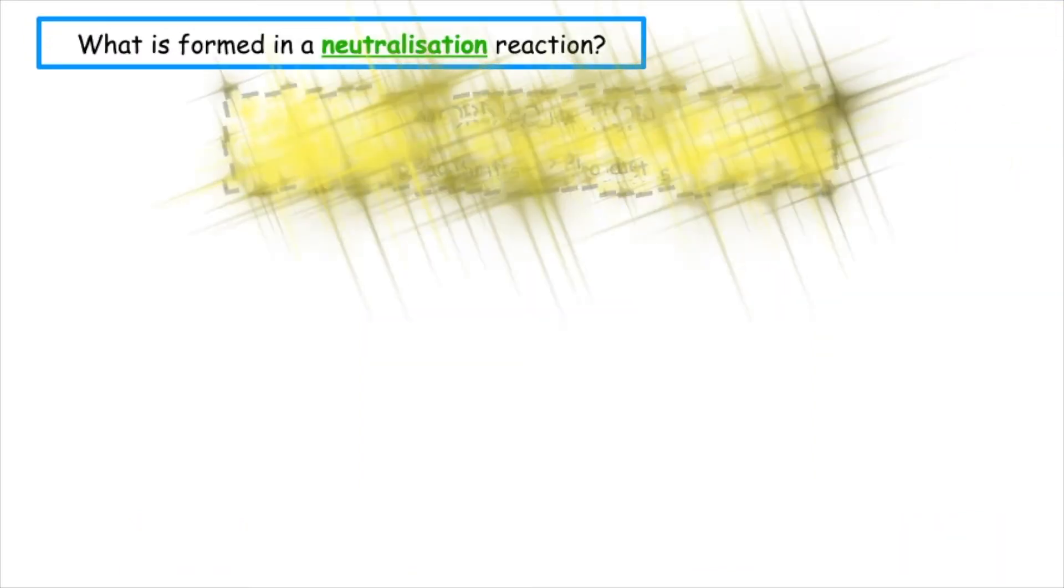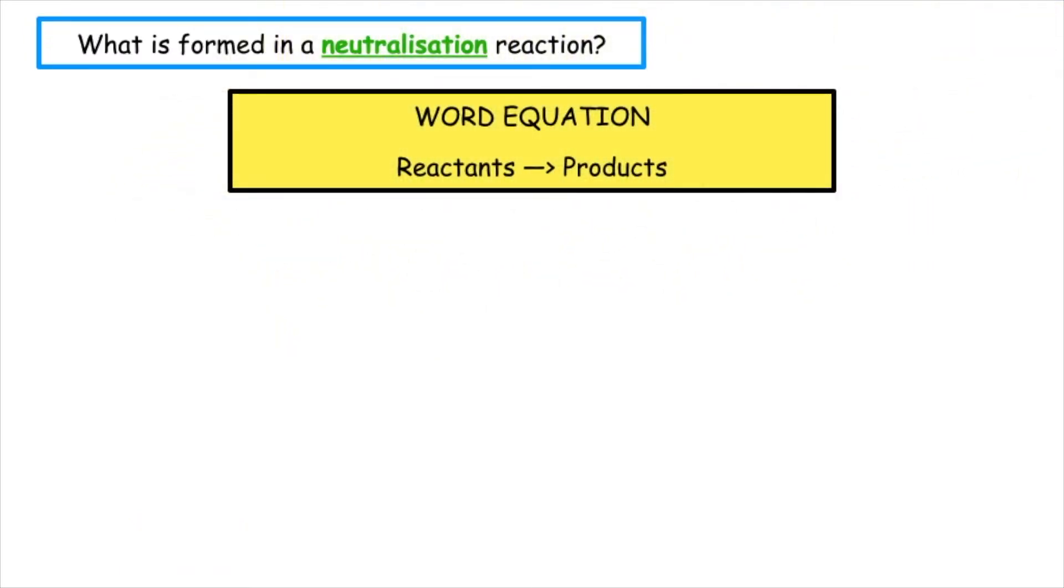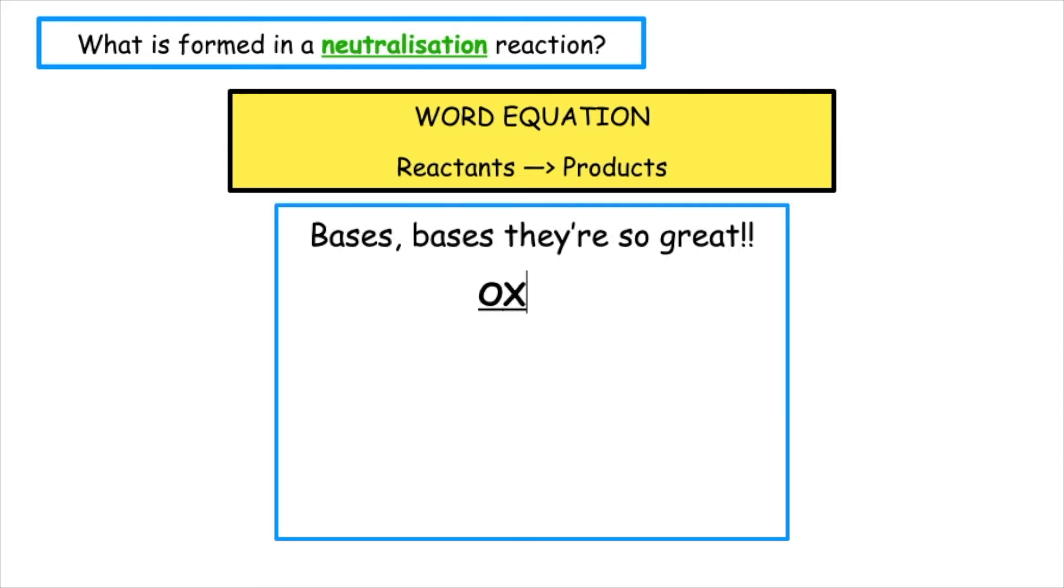So what is actually formed in a neutralisation reaction? There are three word equations that we have to know and these are based off of the Basies song. Now remember, Basies, Basies, they're so great, oxide, hydroxide and carbonate.